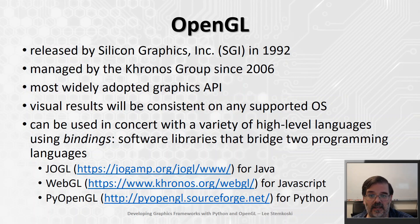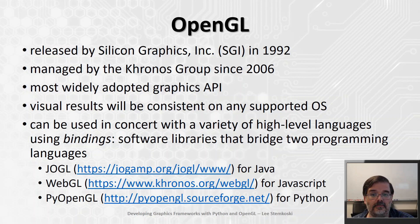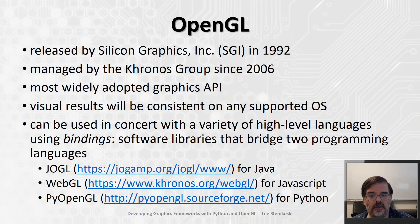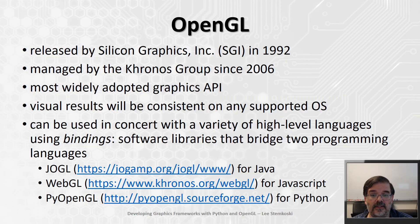OpenGL can be used in concert with many high-level languages using bindings — software libraries that bridge two different programming languages. For example, to program a graphics application with Java you might use JOGL, with JavaScript you might use WebGL, and here we're going to use Python with a library called PyOpenGL. OpenGL was initially released in 1992 and has been managed by the Khronos Group since 2006, a non-profit technology consortium whose members include graphics card manufacturers and technology companies. The OpenGL specification is regularly updated to support new features and functions, many of which we'll learn about in this video series.